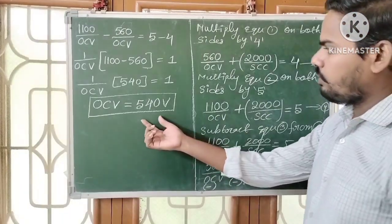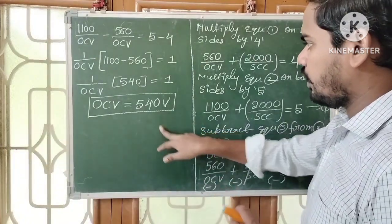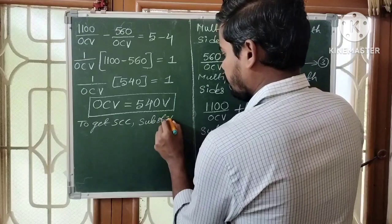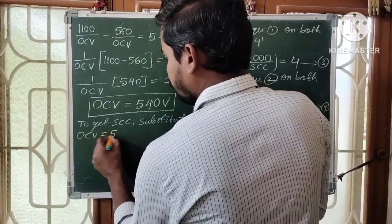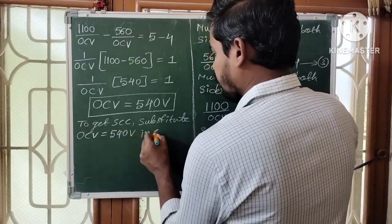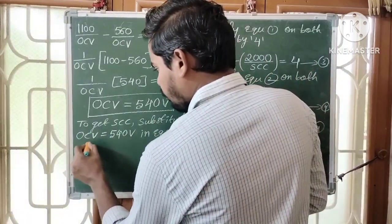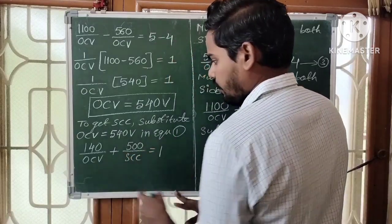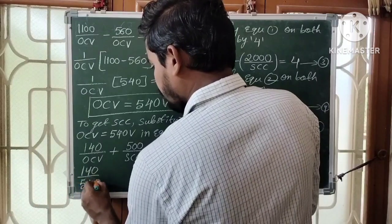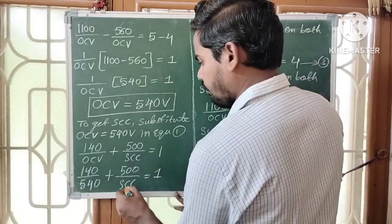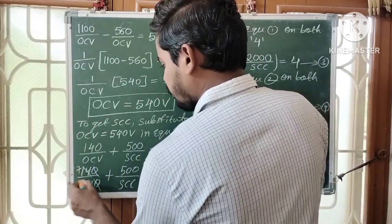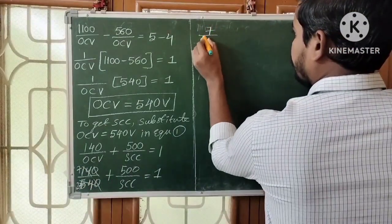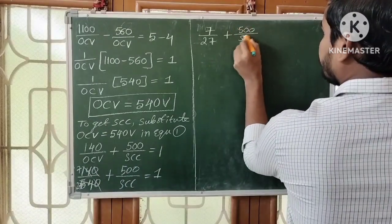To find the short circuit current, substitute OCV = 540 volts into equation 1: 140/540 + 500/SCC = 1. Simplifying 140/540, the zeros cancel to give 7/27 + 500/SCC = 1. Transposing: 500/SCC = 1 − 7/27 = (27 − 7)/27 = 20/27.